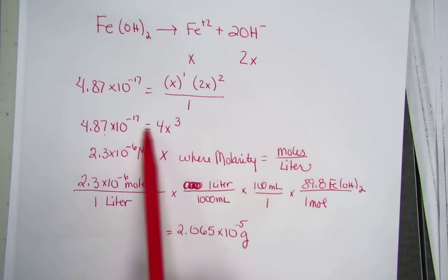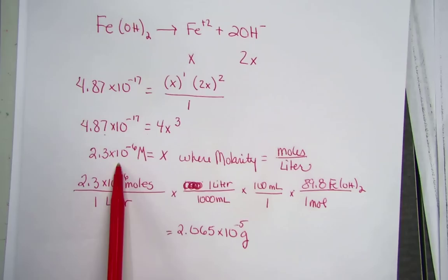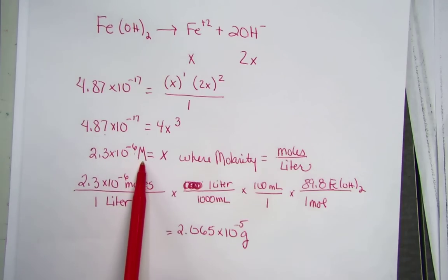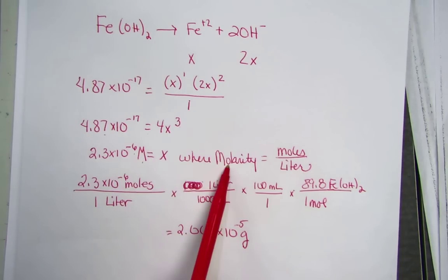Dividing KSP by 4 and cube rooting, we find 2.3 times 10 to the negative 6 molar units. The x were molarity.